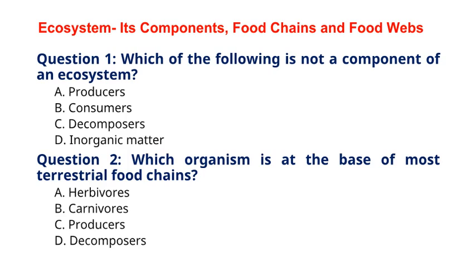Question 2. Which organism is at the base of most terrestrial food chains? A. Herbivores. B. Carnivores. C. Producers. D. Decomposers. The correct answer to question 2 is option C, Producers. Explanation: Producers, such as plants, form the base of most terrestrial food chains by converting sunlight into energy through photosynthesis.